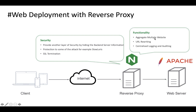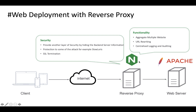From the functionality angle, a reverse proxy can aggregate multiple websites — it can route different branches of a single URL address space to different internal web servers. So if you have multiple websites and multiple web servers, you can expose them all via a single reverse proxy. Last but not least, it can centralize logging and auditing. There are other benefits and use cases such as load balancing, caching, and authentication, but we'll discuss those in detail in other videos.